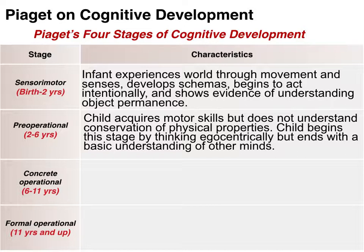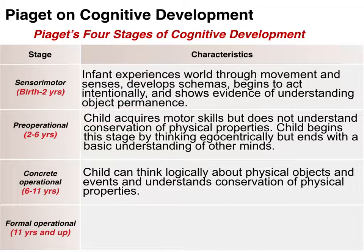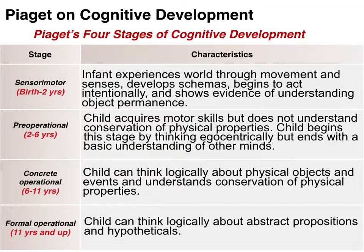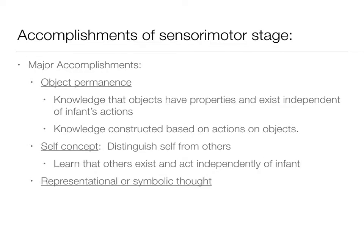In pre-operations, we have those motor skills and some of that verbal development, but we're not going to have the idea of conservation of physical properties. By the end of pre-operations, Piaget would say we start to have theory of mind — though this doesn't quite jive with some things we already know. In concrete operations, children can think logically about the physical world, and by formal operations we can engage in hypothetical thinking.